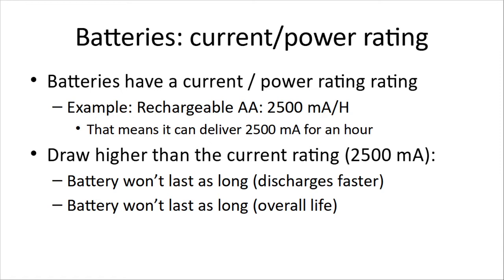Our little AAA batteries are 1.5 volts, our bigger AAs are 1.5 volts, and our enormous C and D cells are 1.5 volts. The difference is how much current the battery can deliver — its power rating. A rechargeable AA battery might be rated at 2,500 milliamp hours, meaning it can deliver 2,500 milliamps for an hour. What won't always be shown is its maximum drain. The battery won't last as long if you draw higher than the rated current, and it will also affect the overall life of the battery.